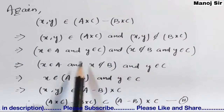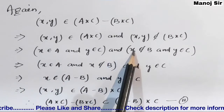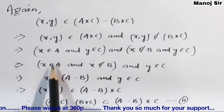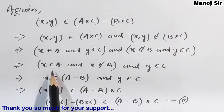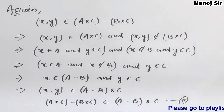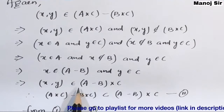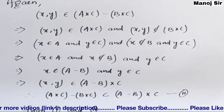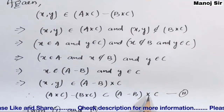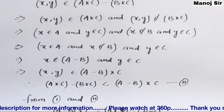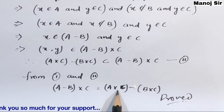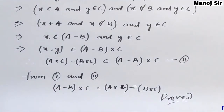Taking y belongs to C as common, we have x belongs to A and x does not belong to B, which means x belongs to A minus B. Together with y belongs to C, we can write (x, y) belongs to (A minus B) × C. Therefore A × C minus B × C is a subset of (A - B) × C — equation number 2. From equations 1 and 2, we conclude (A - B) × C = A × C - B × C. Hence proved. Thank you.